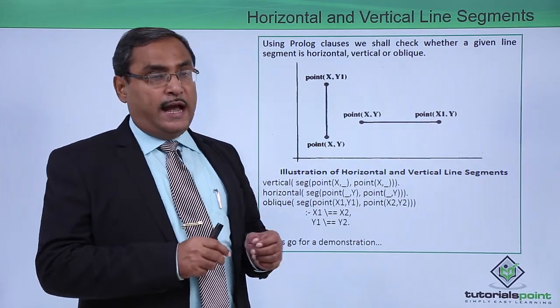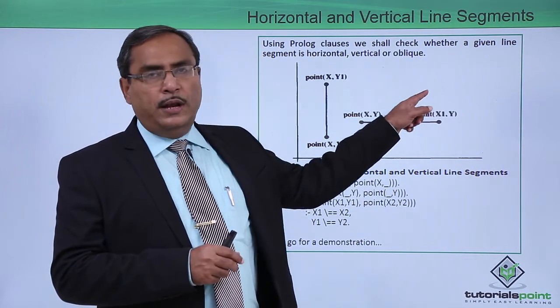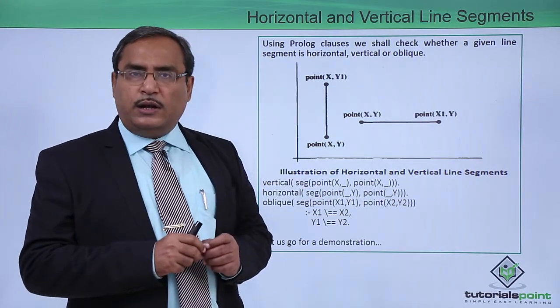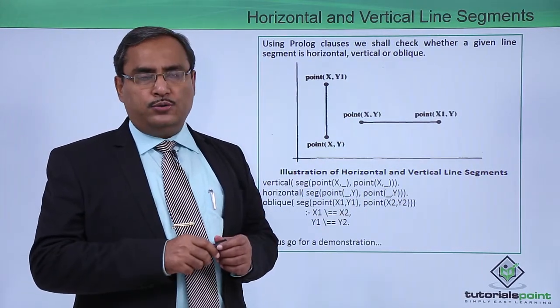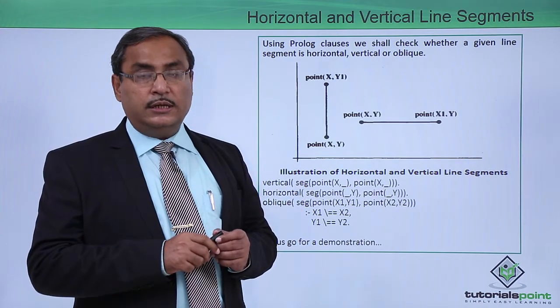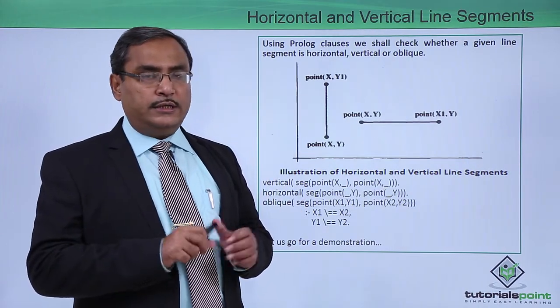Those are the main checks, and if a line is oblique, in the case x1, x2 and y1, y2, they are not matching to each other, they are not equal to each other in pairs.